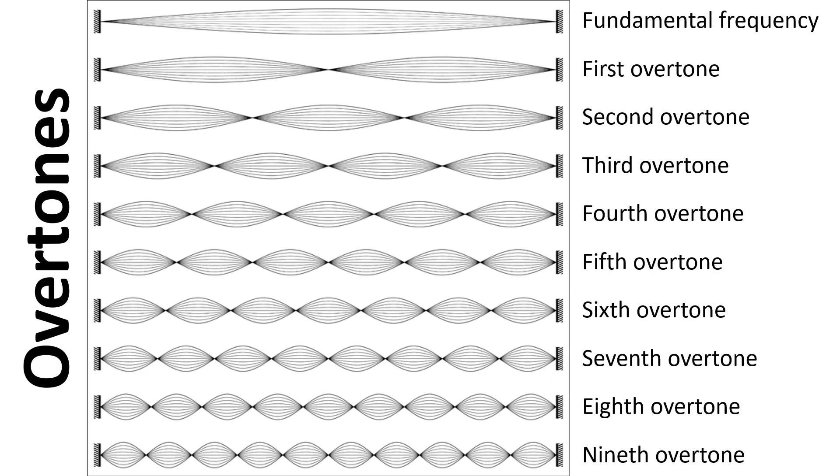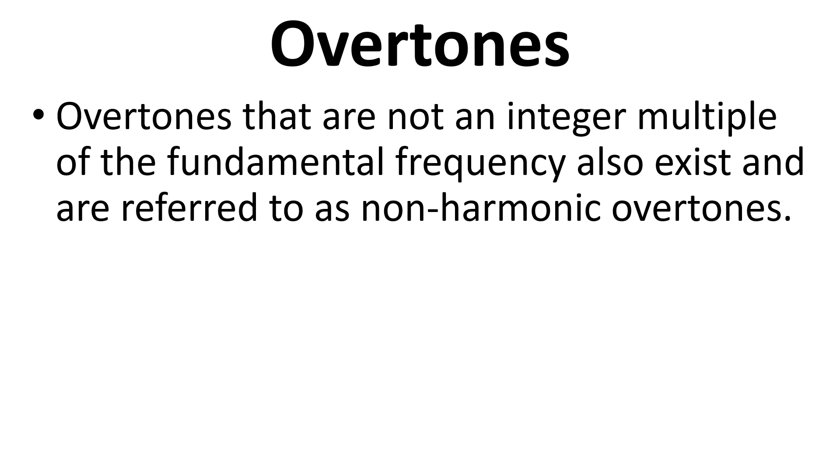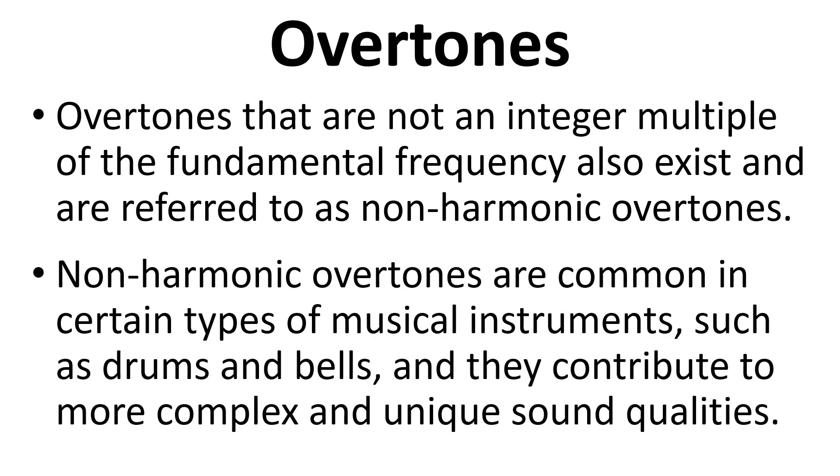This is illustrated in this diagram here. It's the same image as we saw earlier on but just with the new labels that give us information in terms of overtones. Overtones that are not integer multiples of the fundamental frequency also exist and they're referred to as non-harmonic overtones. These non-harmonic overtones are common in certain types of musical instruments such as drums and bells and they contribute to more complex and unique sound qualities for those particular instruments.